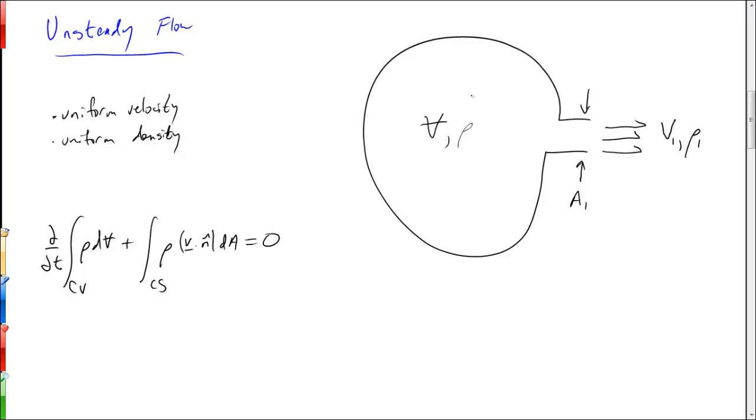Because the density is constant throughout the volume though, this integral over the control volume just returns the volume and so we end up with d/dt of the quantity rho times the volume plus the integral over the control surface of the mass leaving the control surface equals zero.